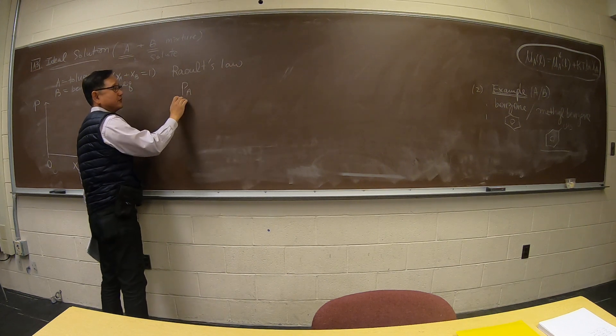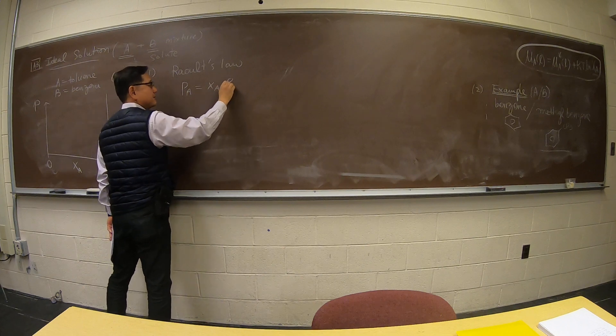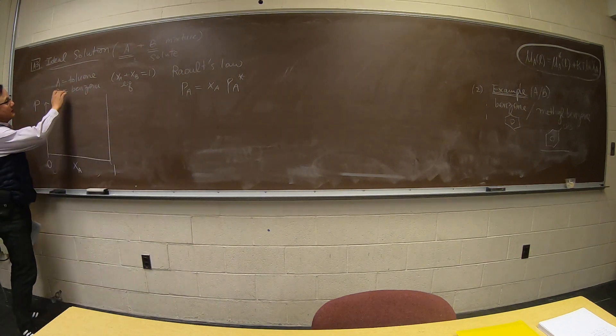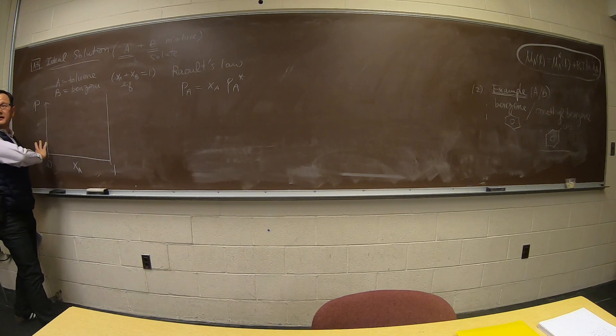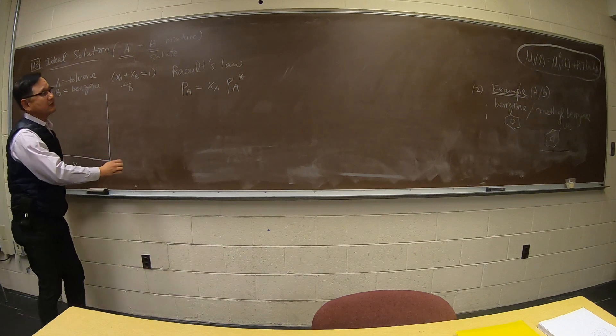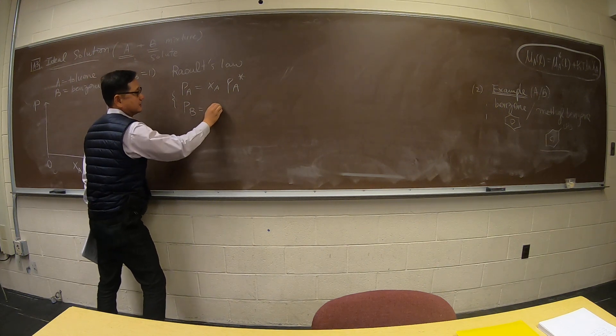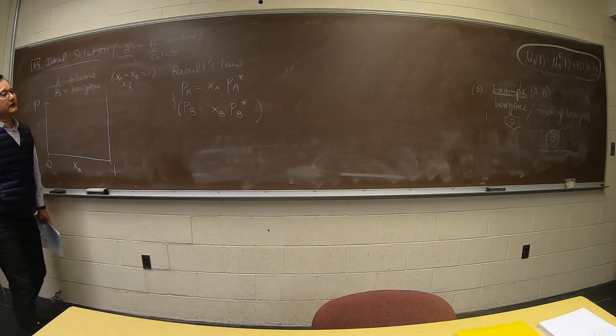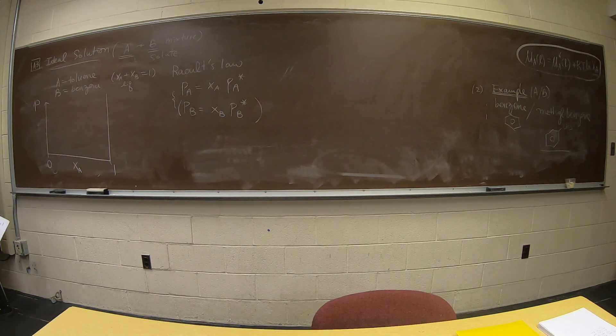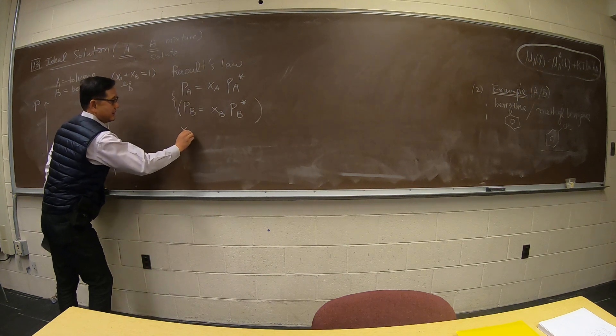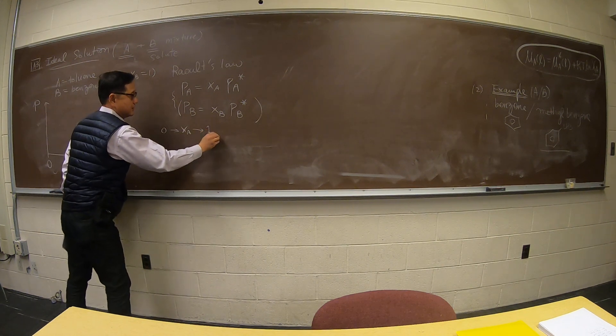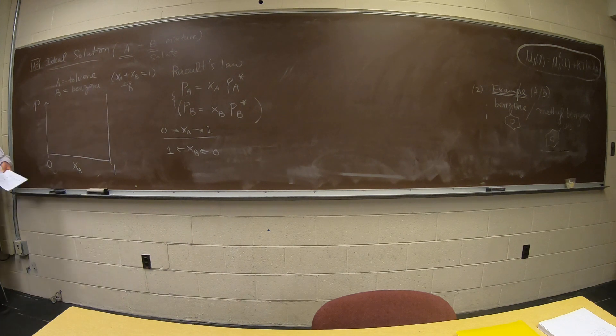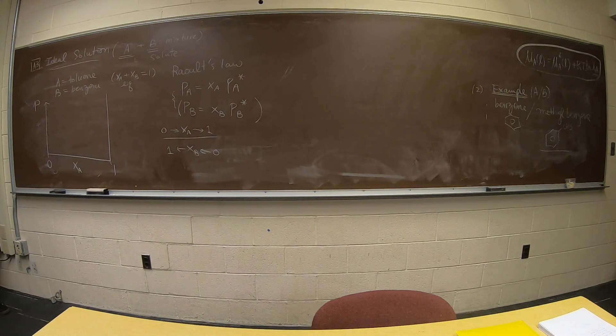I told you that the vapor pressure in the mixture is XA times PA star. Remember that. So I am going to show this is a case where through entire composition they follow Raoult's law. So what that means is solvent and solute. And this is actually an exceptional case of toluene and benzene. They follow through our entire XA, starting from zero to one, while XB starting from zero down to one. So this is a case where everything behaves the same way.